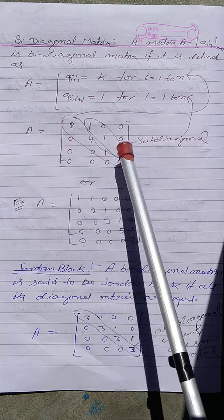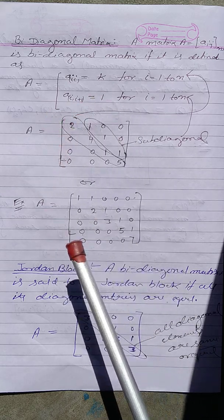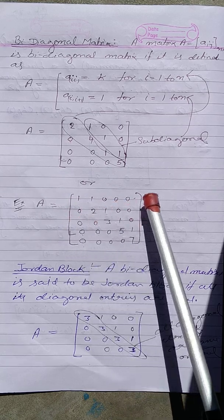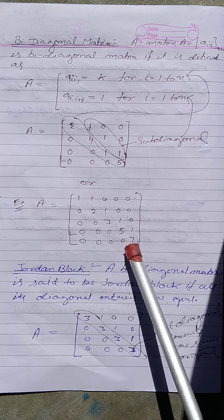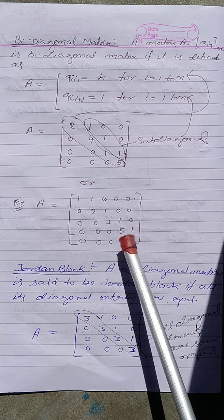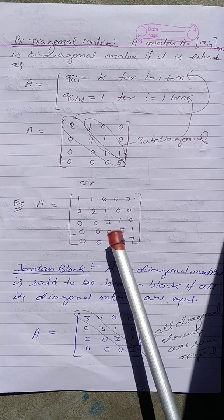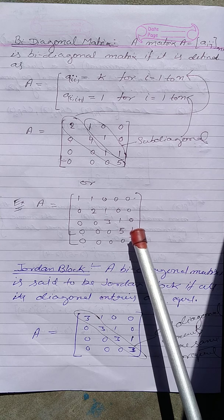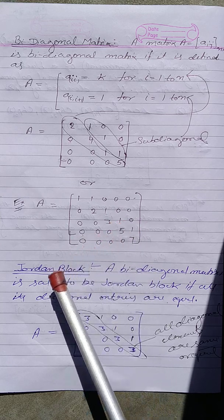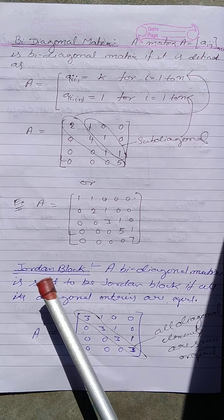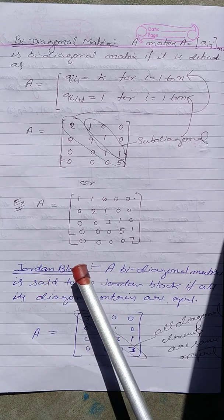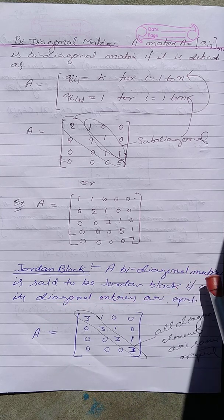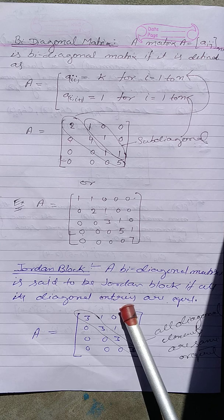For example, a matrix where the diagonal elements are eigenvalues and the superdiagonal elements are 1,1,1 is a bidiagonal matrix. A second example has the form [1,1; 0,1; 0,0,1] where diagonal elements are eigenvalues and superdiagonals are 1. A bidiagonal matrix is called a Jordan block if all the diagonal elements are equal.